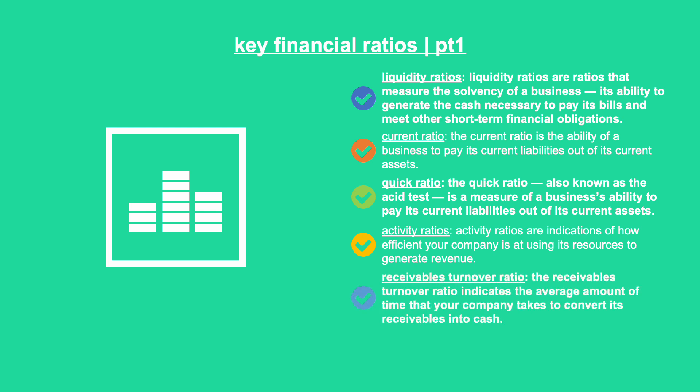Receivables turnover ratio: the receivables turnover ratio indicates the average amount of time that your company takes to convert its receivables into cash. The ratio is a function of how quickly your company's customers and clients pay their bills; basically it points out problems that your company may be having in the collections process. Receivables turnover ratio equals net sales divided by accounts receivable. The higher the ratio, the better.